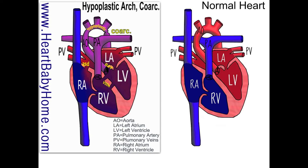Septal refers to the wall between the left side and the right side of the heart. Atrial refers to the top part of the heart, and ventricular refers to the bottom chambers. So those are just holes in that wall that separates the chambers, and that is it for heart number 50.